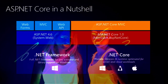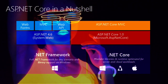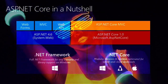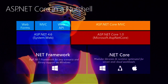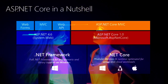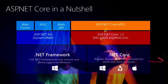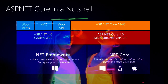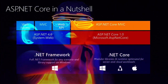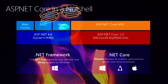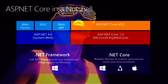ASP.NET Core is designed to allow runtime components, APIs, compilers, and languages to evolve quickly, while still providing a stable and supportive platform to keep apps running. Multiple versions of ASP.NET Core can exist side by side on the same server, meaning one app can adopt the latest version while other apps keep running on the version they were tested on.